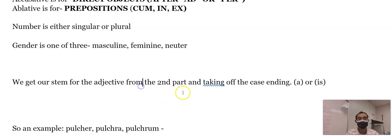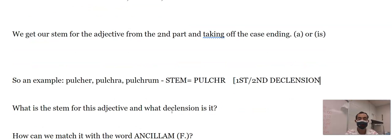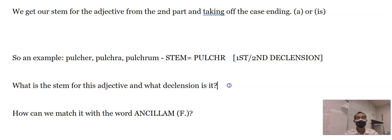We get our stem from the second part of an adjective, and then taking off the case ending, like an a or an is. So we get words like pulcher. If I take the a, the stem equals pulchr. This is a first and second declension adjective. It uses those declensions as its endings. It's first and second because it has the a in the second part.